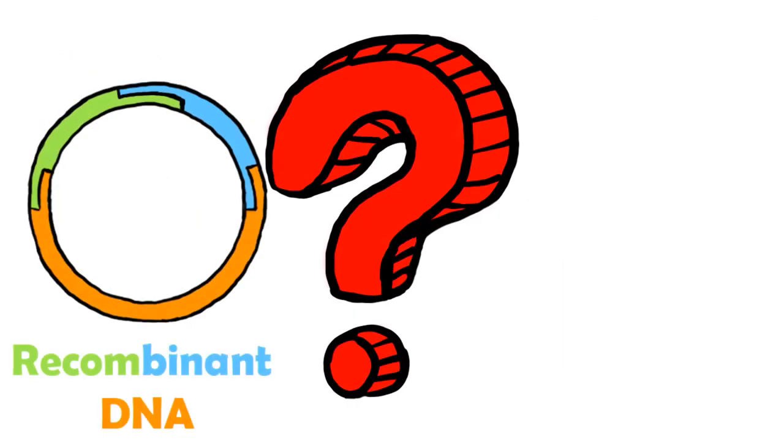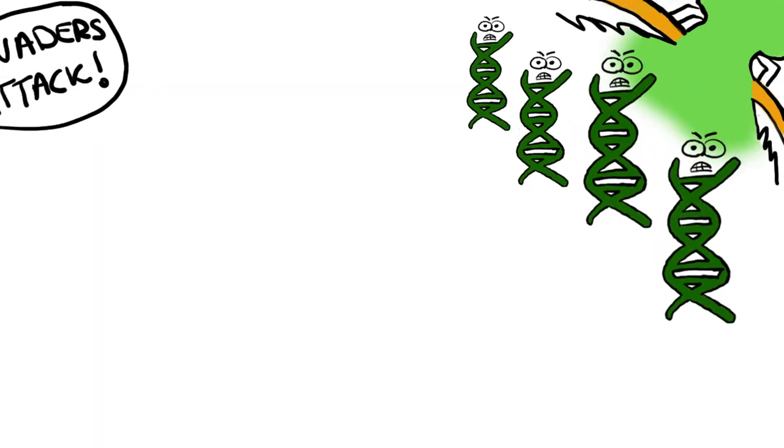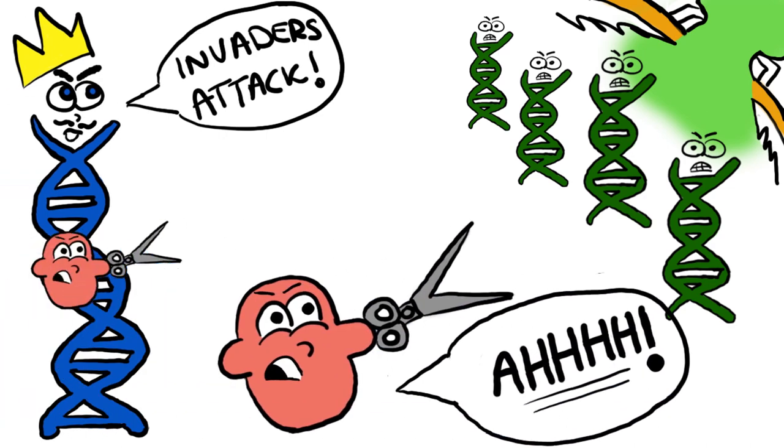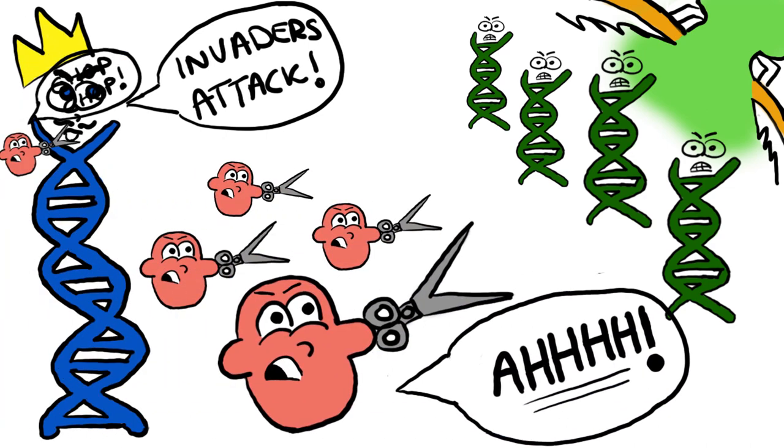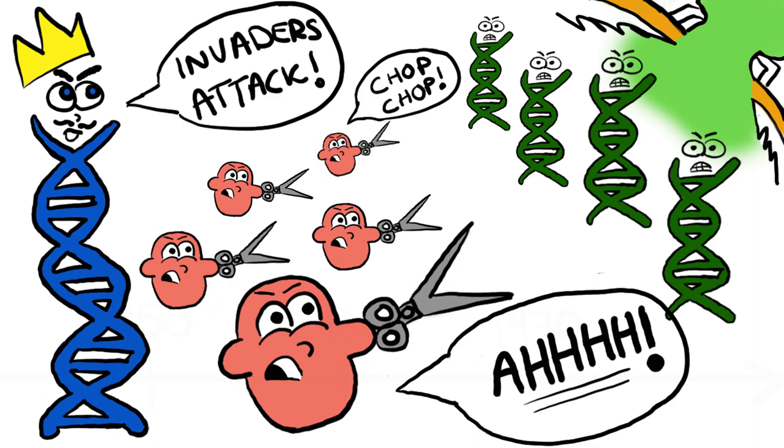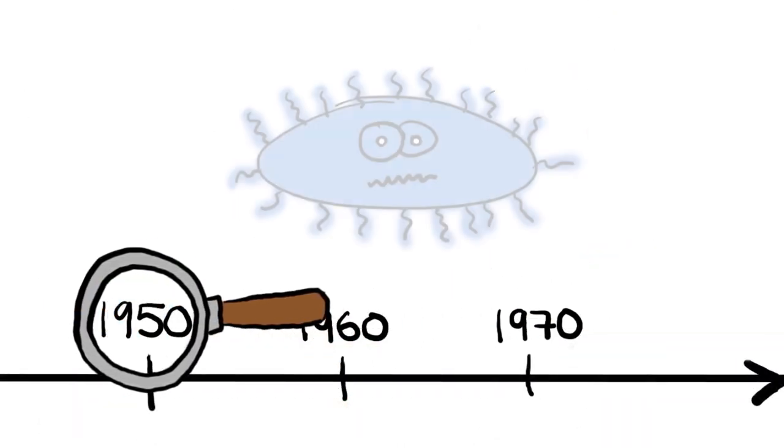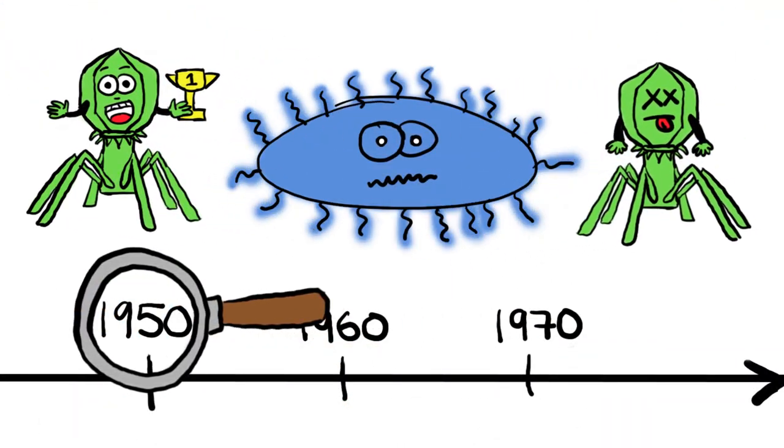Well, it started with a revolutionary technique called recombinant DNA which owes its success to the discovery of restriction enzymes. Daughter of Werner Arber described restriction enzymes as servants of bacterial cells that acted like scissors to cut invading DNA. Arber was expanding on a phenomenon noticed by Luria and Human in the 1950s where some bacteriophages survived while others died.